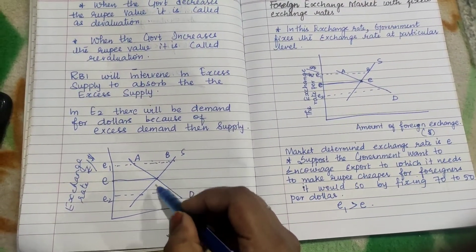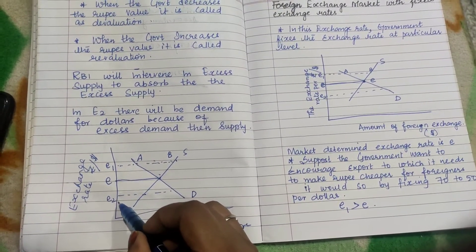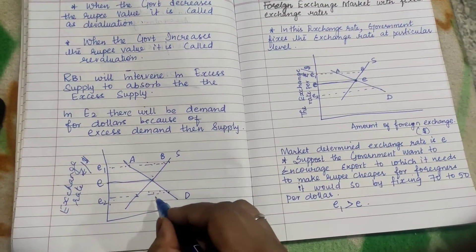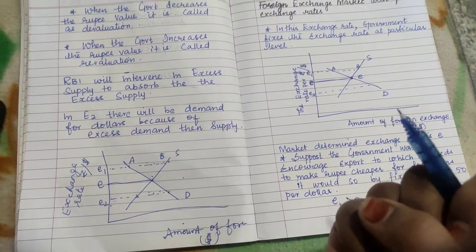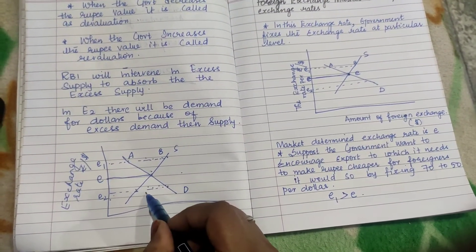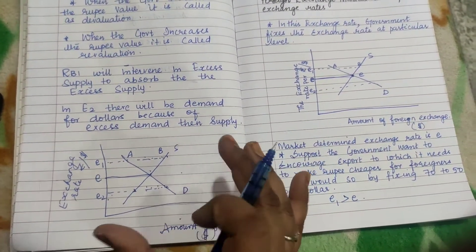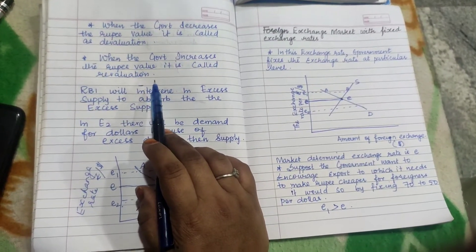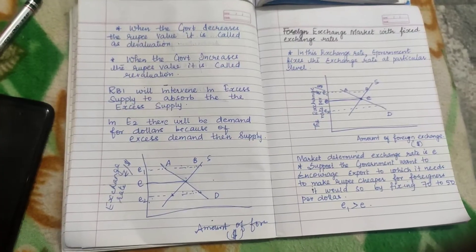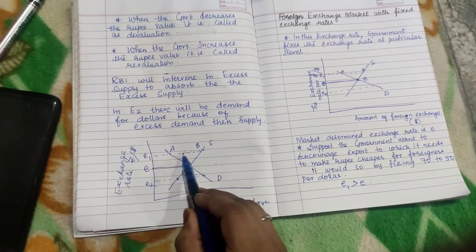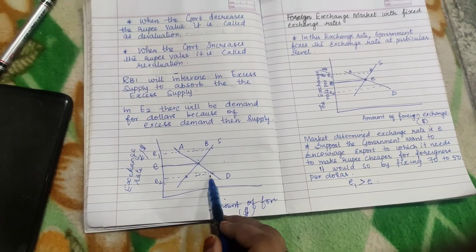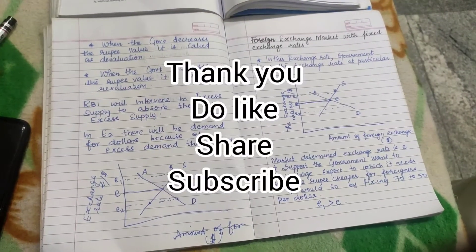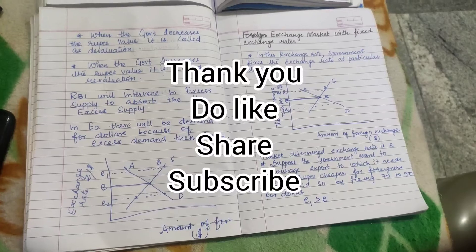When there is more import demand, the equilibrium shifts from E to E2. Here, supply is less and demand for dollars is more. The RBI needs to release its held dollars to meet this demand. When the government decreases the rupee value it is called devaluation; when it increases the rupee value it is called revaluation. The RBI will always intervene — absorbing excess supply or releasing held dollars to meet excess demand. Thank you for watching.